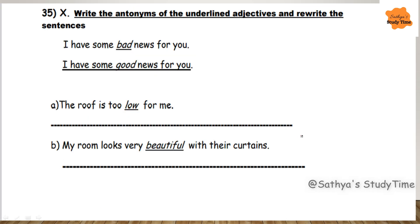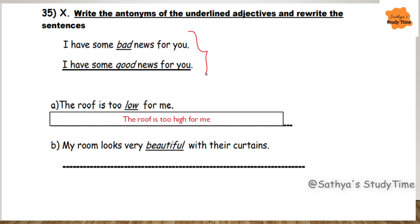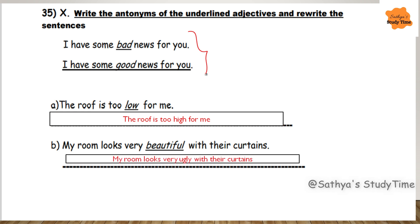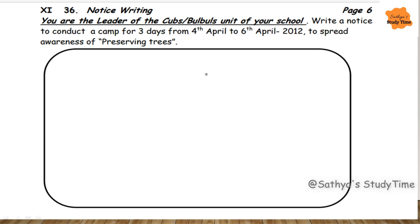Write the antonyms of the underlined adjectives and rewrite the sentences. As a sample: bad becomes good. The roof is too low for me — you have to write high. My room looks very ugly with their curtains. Next, notice writing: you are the leader of the Cubs and Bulbuls unit of your school. Write a notice to conduct a camp for three days from 4th April to 6th April 2012 to spread awareness of preserving trees.